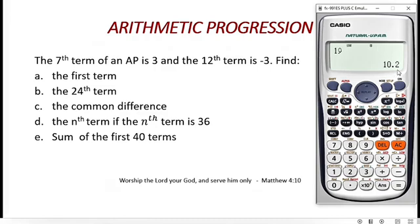If you want the answer in fraction form, press the SD button. It gives 51 over 5. If you want it in decimal, press SD again. So the first term is 51/5 or 10.2.